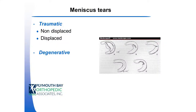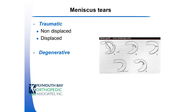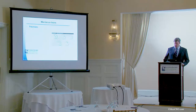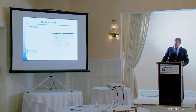Starting off with meniscal tears, there are various different types. The more traumatic tears include the bucket handle tear, where you get a tear through the rim of the meniscus and a piece of it flips into the joint and can cause the knee to lock — a typical high school or college-age athlete injury. There's also a flap tear, where a flap of tissue can move in and out of the joint like a pebble in the shoe. And then the radial tear, which can produce more pain-type symptoms. Then you have the more chronic or degenerative-type tears where the meniscal tissue just starts to wear out, usually associated with arthritic changes on the x-ray.